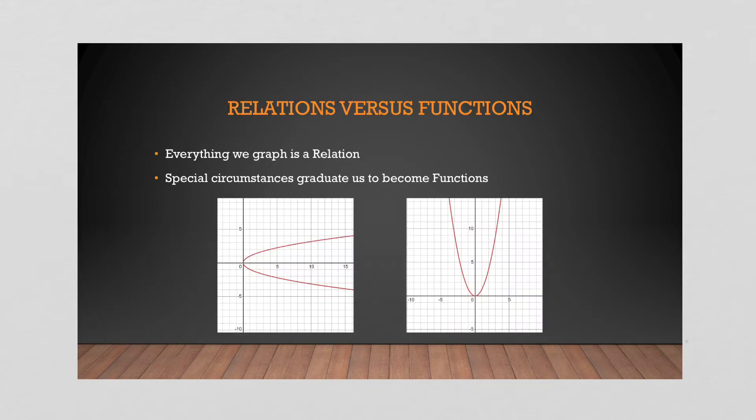First off, what is a relation versus a function? Anything you can graph on your grid is what we call a relation. You can see you got two images down below, they're both graphs, they're both relations. Even if you just had a collection of points on a grid, that's also a relation. Because it is a relationship between an x and a y value that allows you to exist on your grid. So anything you plot on a two dimensional grid is a relation.